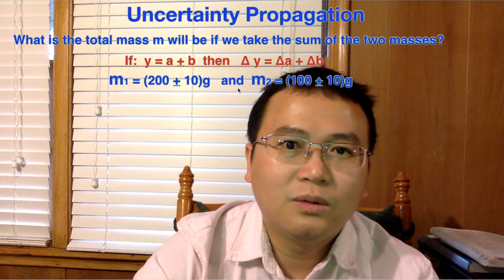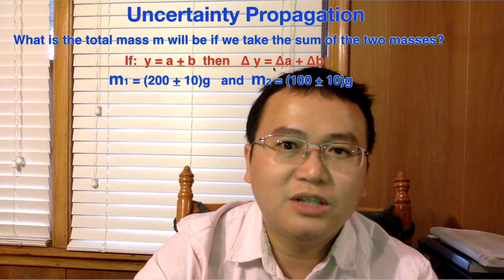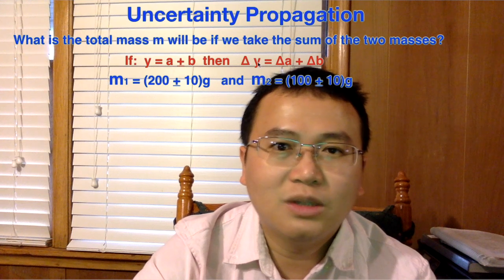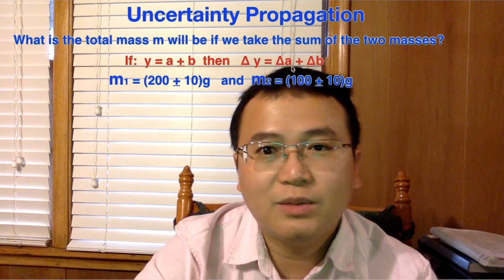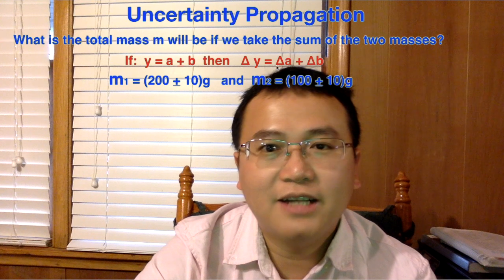To find out uncertainty of this quantity, of the calculated quantity, we need to add uncertainty of A and uncertainty of B.